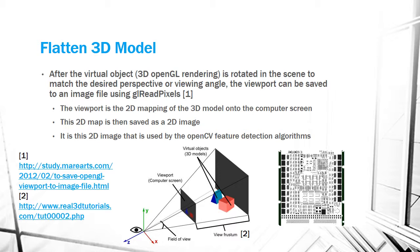After 3D model creation, the next step is to flatten the 3D model. After the virtual object is rotated in the scene to match the desired perspective or viewing angle, the viewport can be saved to an image file using GLReadPixels. The viewport is the 2D mapping of the 3D model onto the computer screen. This 2D map is saved as a 2D image, which is used by the OpenCV feature detection algorithms. An example of a flattened frontal view of the 3D model is shown on the right.